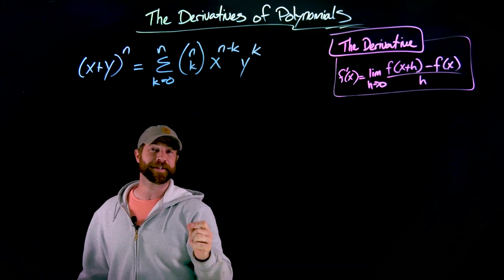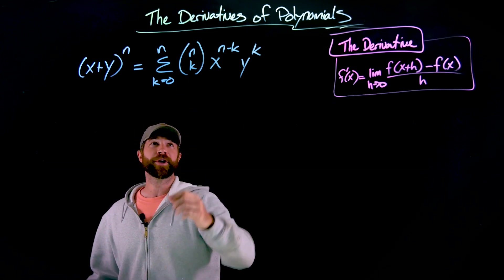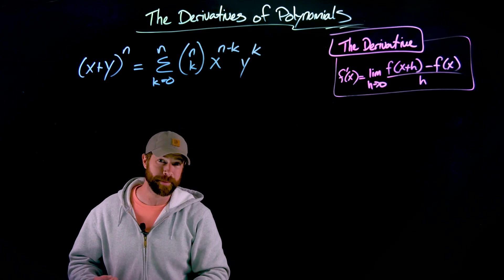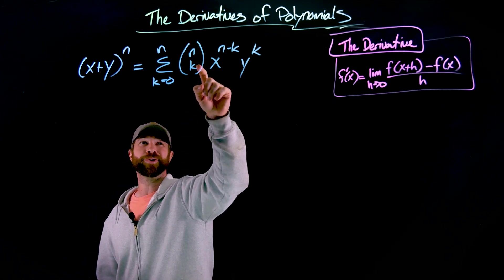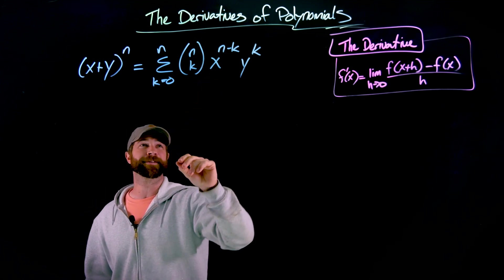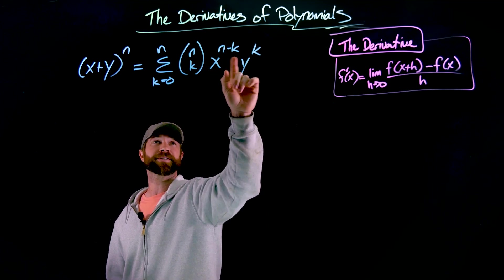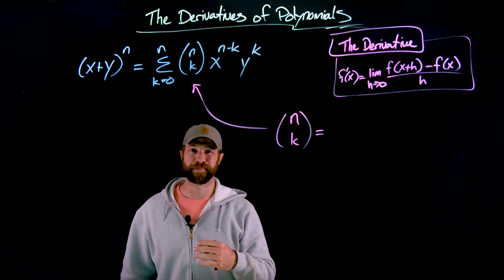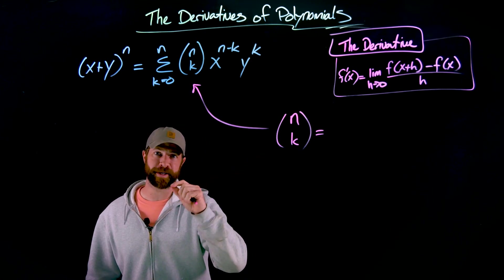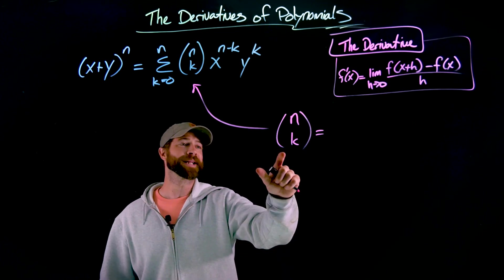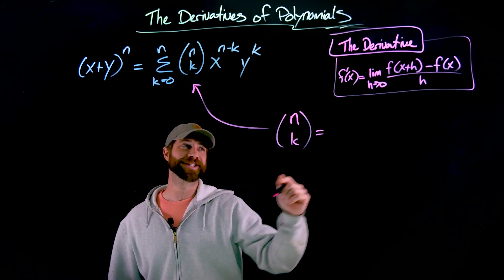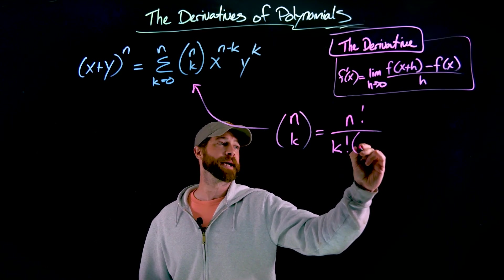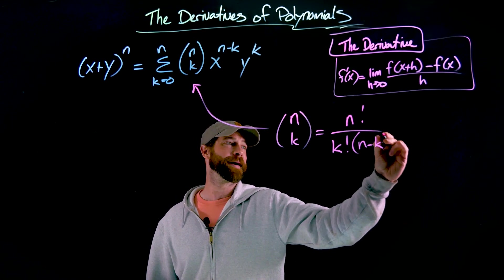This is the coefficient of the term. This is a choose statement. You maybe have seen this in the previous discussions of probability or combinations of permutations. This is n choose k. I'll define that in half a second. And these are the xy factors, and this how it describes their exponents. For the purpose of the proof, there's a little bit of reason to dig into this choose statement. In this case right here, n choose k is the formula n factorial over k factorial times n minus k factorial.